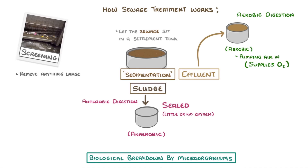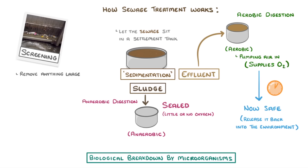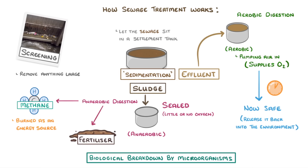Including the other microbes. For the effluent, this means that the water is now safe and we can release it back into the environment. For the sludge, the process of anaerobic digestion produces methane, which can be captured and burned as an energy source, while the remaining digested waste can be used as a fertilizer as it's rich in nutrients.